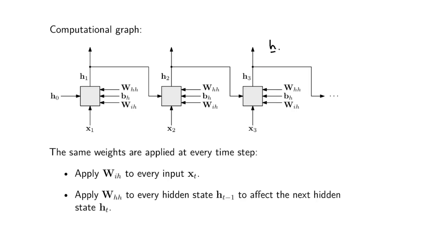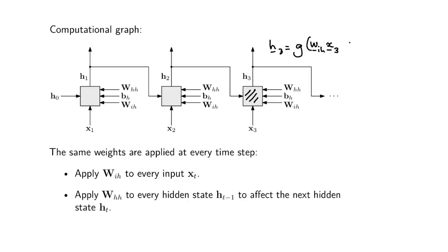For instance, H3 — the operation defined in this block would be the following: take a non-linearity, take my input at time step 3, multiply that with the input-to-hidden matrix. Add the hidden-to-hidden matrix multiplied by what happens at the previous time step, and then add this bias vector. That would be the operation defined by this specific block. That operation will obviously be the same in the other blocks, but the inputs will be different. In a recurrent neural network there's actually one set of inputs which are shared between all the blocks.